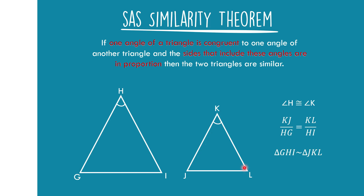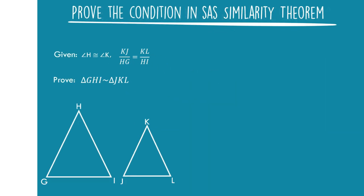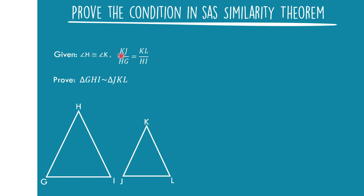Now let's prove the conditions in SAS Similarity formally. Given that angle H is congruent to angle K, and KJ over HG is equal to KL over HI, let us prove that triangle GHI is similar to triangle JKL.